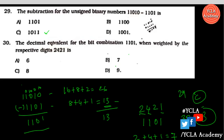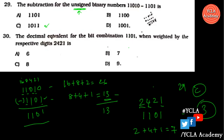Next is subtraction. Converting to decimal: 26 minus 13 equals 13, so the answer is option C. For the decimal equivalent of a 2421 code number — the 2421 code is similar to the 8421 code — the answer works out to 7, so the answer is option B.